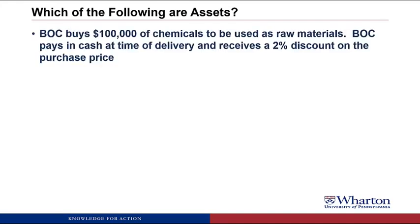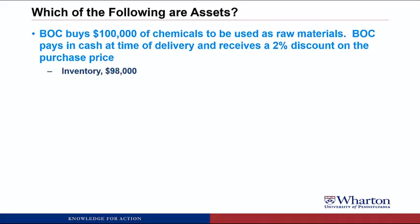BOC buys $100,000 of chemicals to be used as raw materials, paying cash at delivery and receiving a 2% discount. This is an asset called inventory — a term used for products or raw materials bought to be turned into a finished product sold at a markup. It meets both criteria: we acquired the chemicals in a market transaction, and the value of benefits is known. Note the value is $98,000, not $100,000, because we value it at what we actually paid.